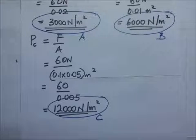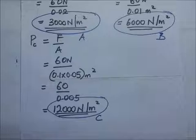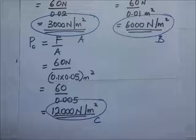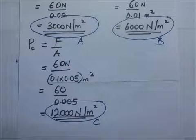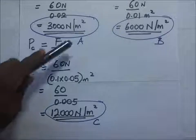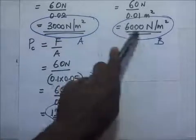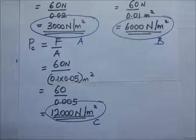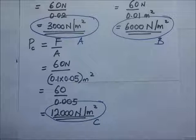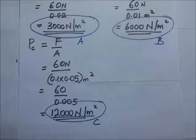Now you realize that we are still having the same box or cuboid. It has the same weight, which is 60 newtons. But when you make this thing lie on the surface of the table on these three different faces A, B, and C, you realize that the pressures being exerted are different. Let's try and compare these pressures being exerted on this table and relate them with the area.